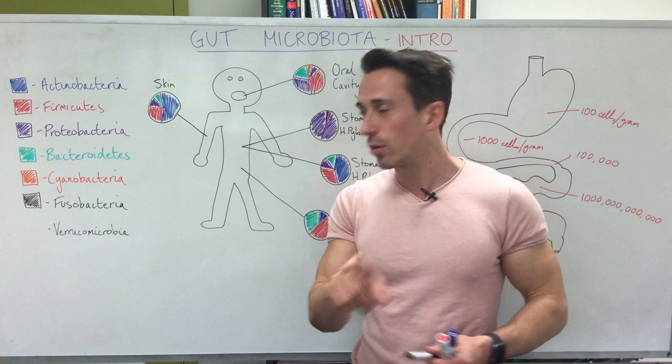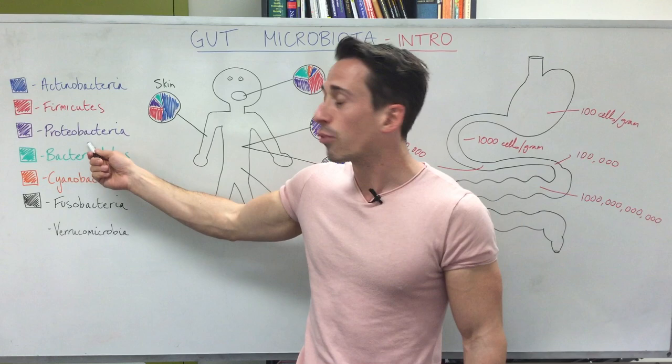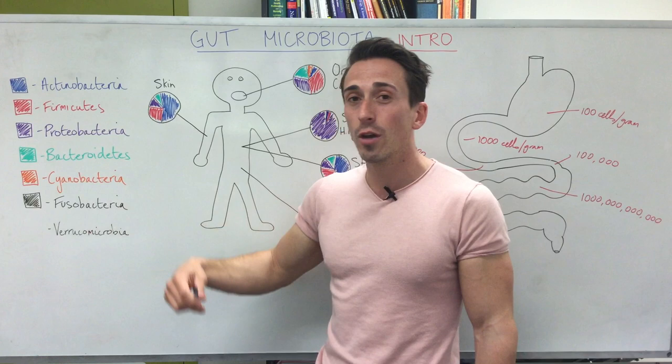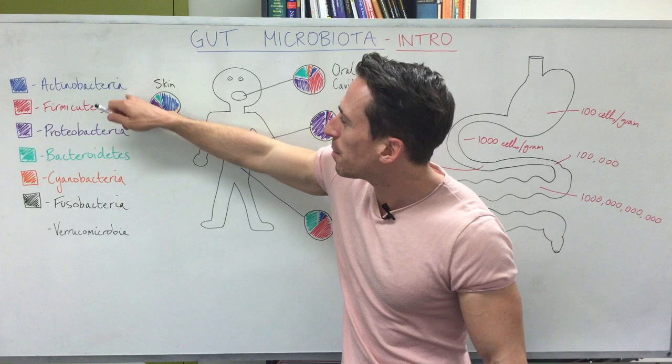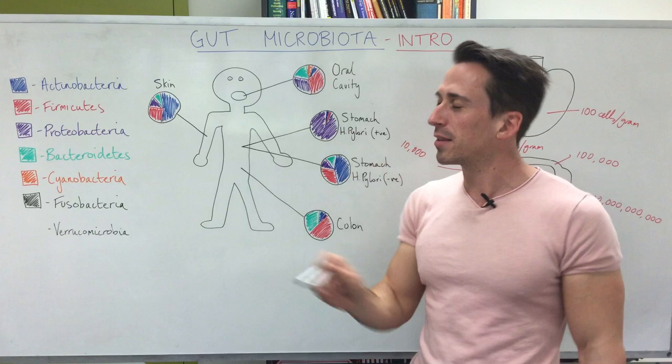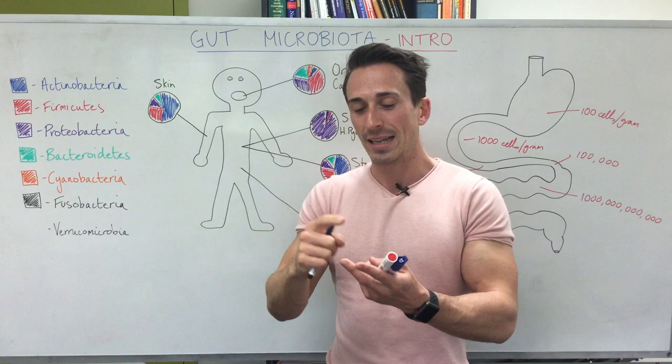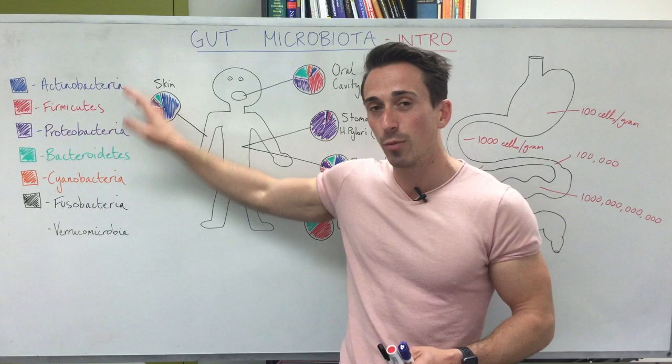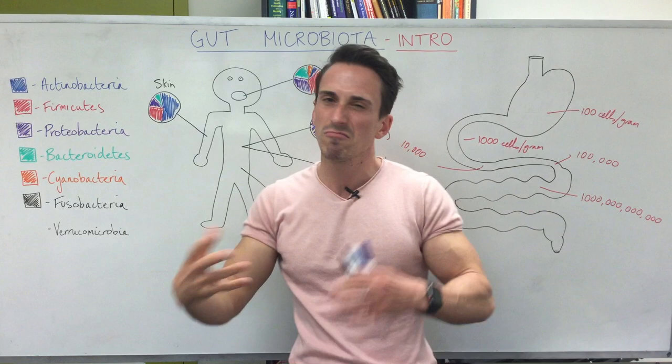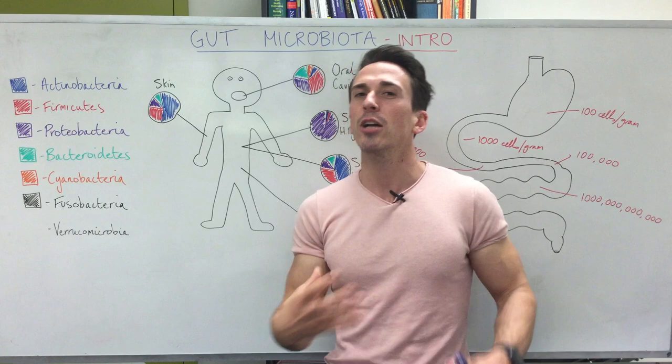What are those six main types? They are actinobacteria, firmicutes, proteobacteria, bacteroidetes, cyanobacteria, fusobacteria, and less commonly, verrucomicrobia. You've probably never heard of these, but you may know subcategories or species such as streptomyces, lactobacillus, and mycoplasma — these are all species within these particular phyla. So even though there are only about six to ten phyla in our gut, there are around 160 species that you or I would have within our gut fitting within these categories.